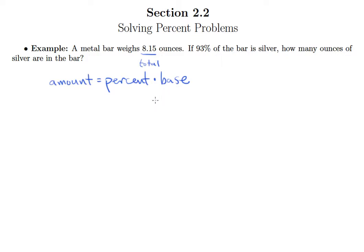Well, you're going to take a percentage of the total to figure out how much silver is in the bar. So we definitely know that 8.15 is our base, and of course, 93% is the percent, so we would write its decimal form.